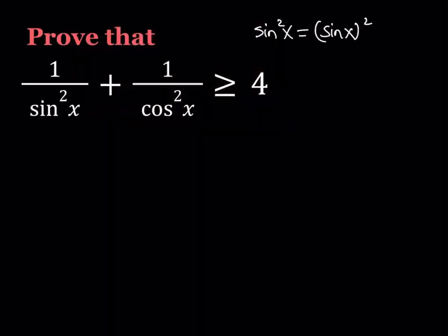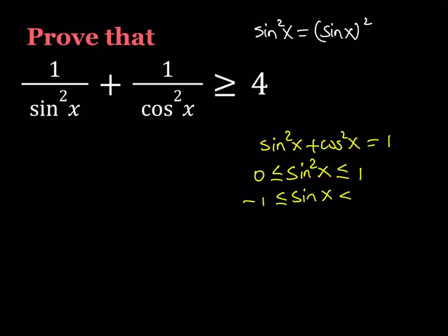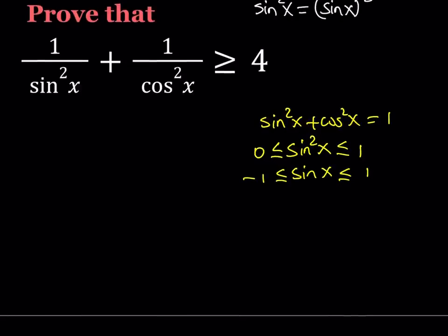So we're going to be using the fact that sine squared x plus cosine squared x is equal to 1. We're going to use the fact that sine squared x is between 0 and 1, because sine x is between negative 1 and positive 1. If you square that it's going to become non-negative. And we're also going to be using the formula for sine 2x which can be written as 2 sine x cosine x.